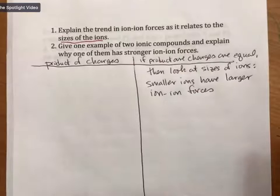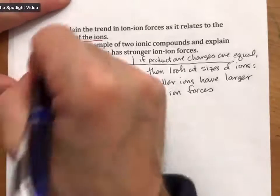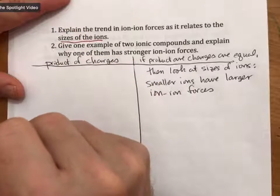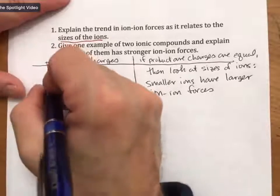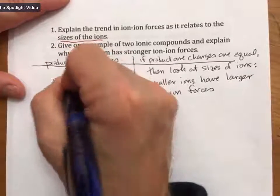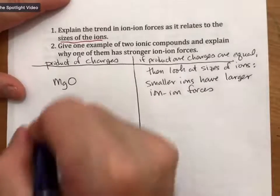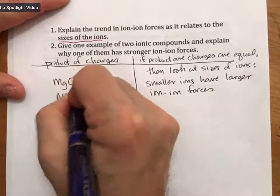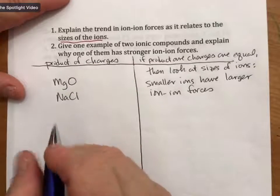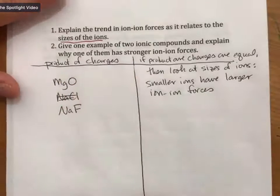Okay, and product of charges, we've talked about an example of that. If we were to compare, and we'll do a different example this time, how about magnesium oxide, chloride, and sodium chloride. Actually, we'll do sodium fluoride.